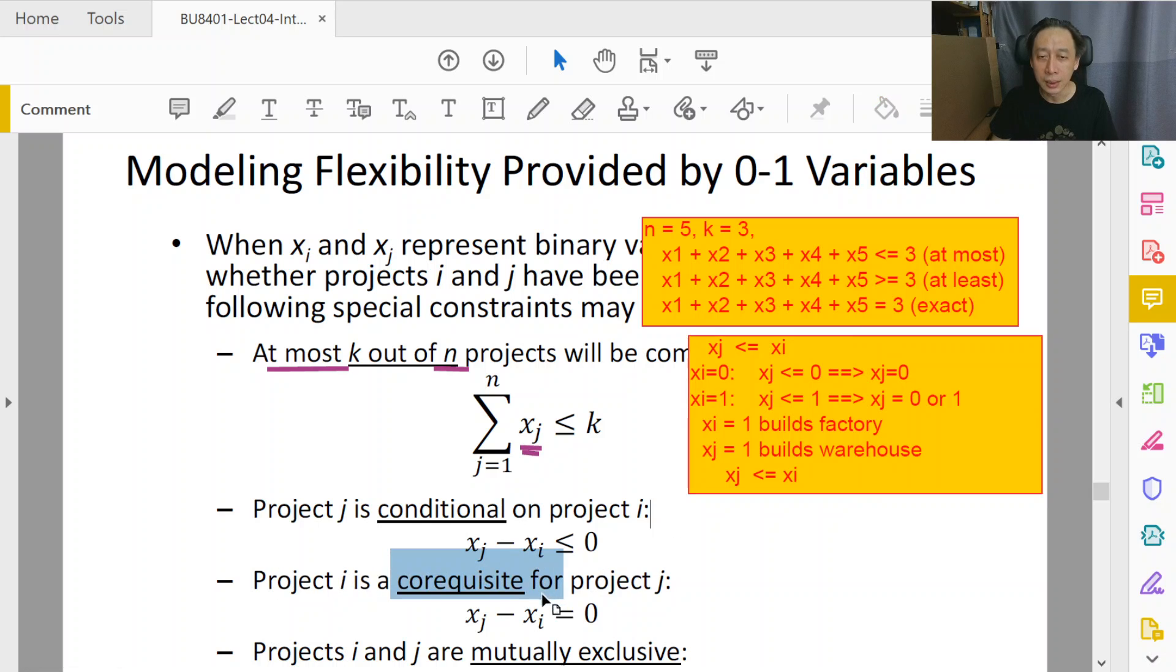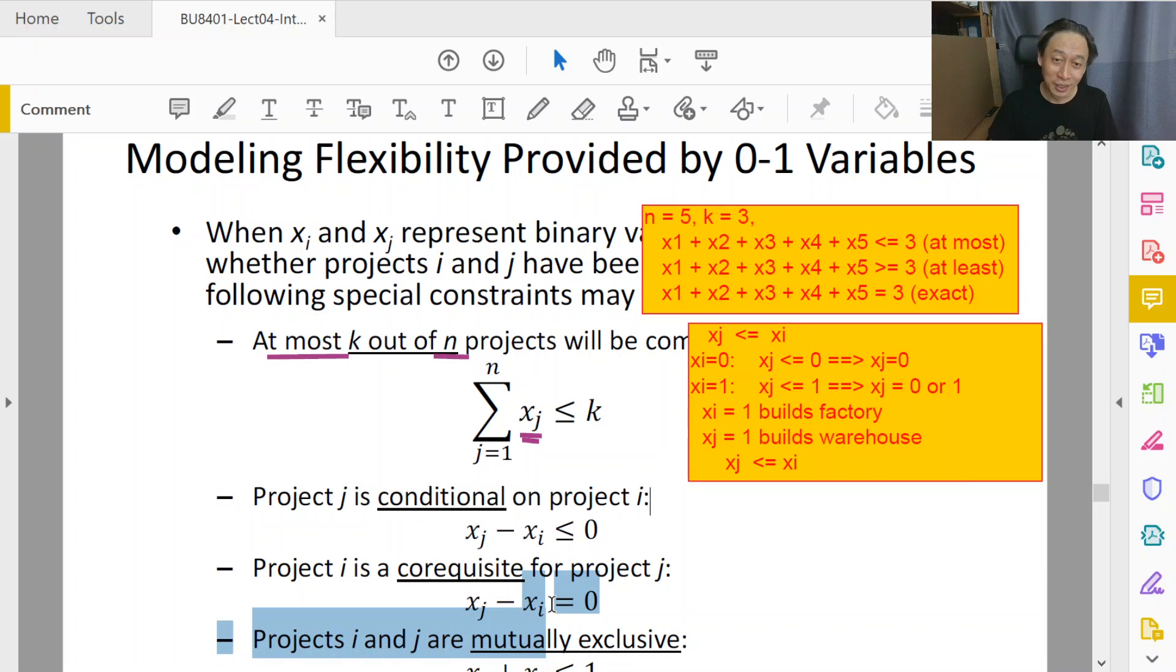Good. Let's move on to co-requisite. So a decision of do project xi is co-requisite with decision to do project xj. If you do j, then you do i. If you do i, then you do j. If you do not do i, then you don't do j and so on. So that means they are the same decisions. And what that means is that xj is one, xi is one. And if xj is zero, xi is zero.